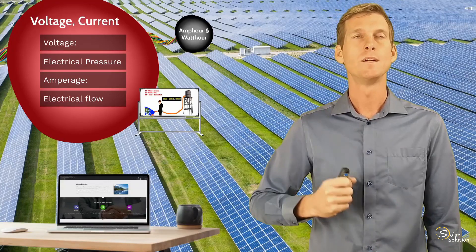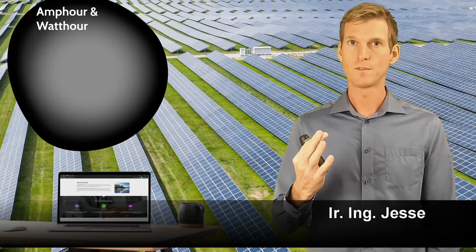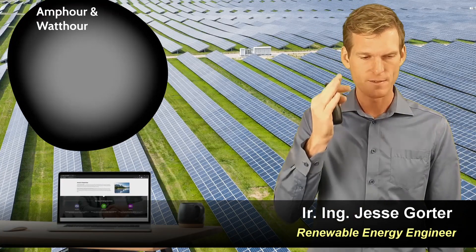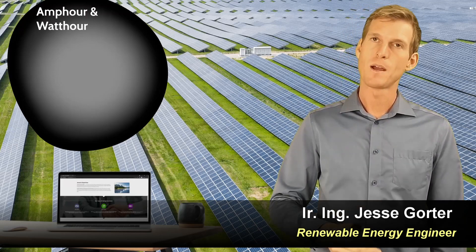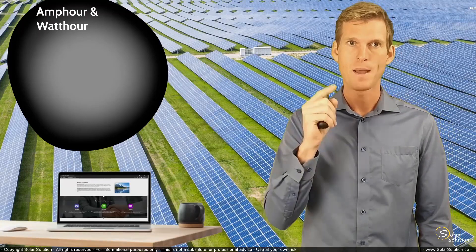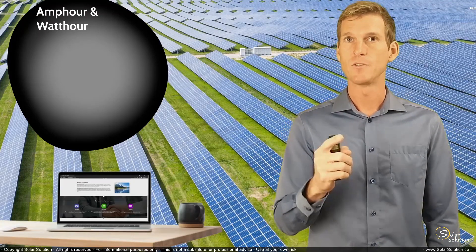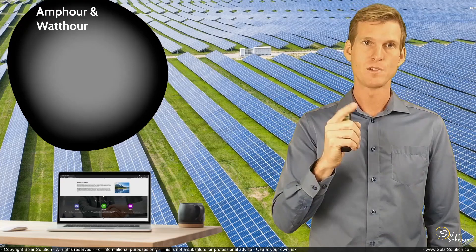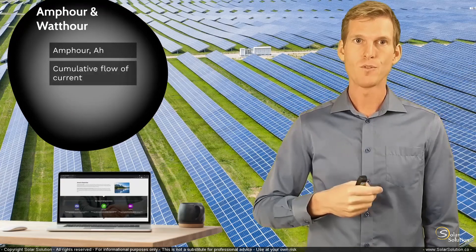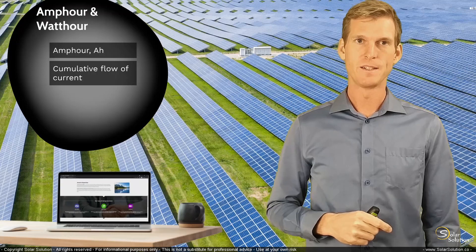The amp hour and the watt hour refer to a specific quantity of something, whereas the volts, the amps, and the power are at a very instant. The volts, amps, and the power at this very moment have so many volts, so many amps, or so many watts. The amp hour or the watt hour refer to a specific quantity and it relates to a time frame. So you can see that the amp hour, or AH, which is described as the cumulative flow of current, also has the hour value in the unit described.